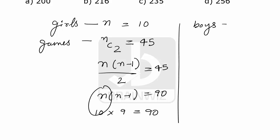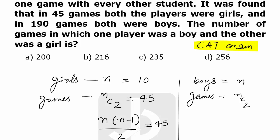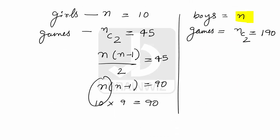Same fashion we have to find out boys. How many boys are there? We have no idea. Let it be n once again. So the number of games held among the boys will be nC2. Now 190 are games, means nC2 is 190. So we have to find out the value of n.